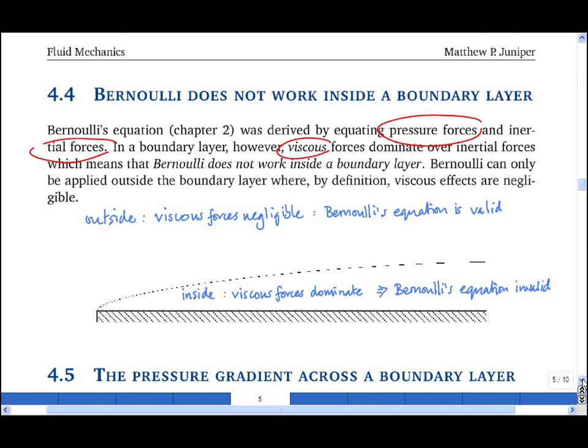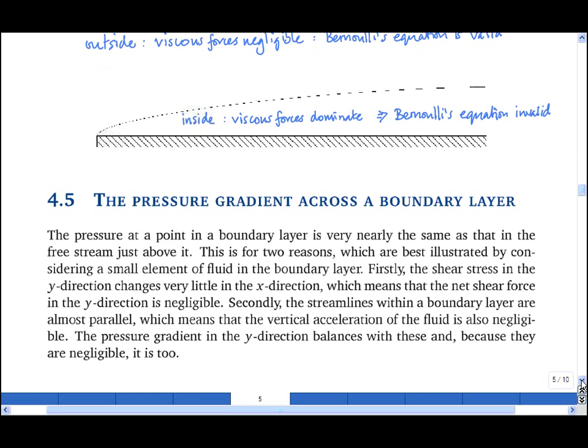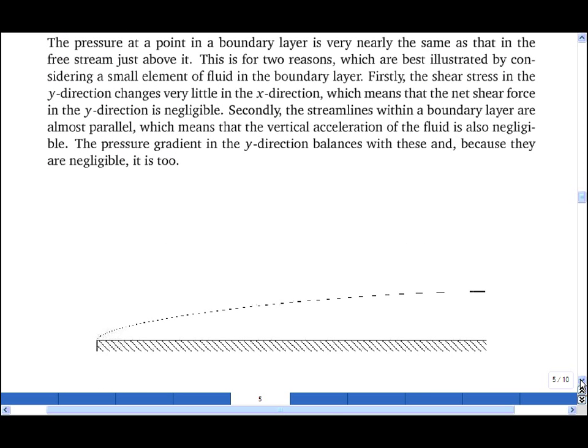In chapter 2, when we derived Bernoulli's equation, we also derived an equation relating the pressure gradient across a boundary layer with a centripetal acceleration, and therefore the curvature of streamlines. And this equation is valid inside a boundary layer, which we can show through the following argument.